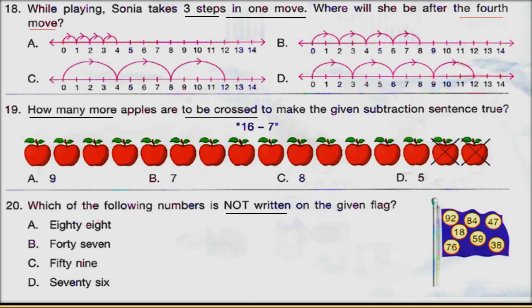You can see my previous video for class 1 for questions up to 17. Question 18: while playing, Sonia takes 3 steps in 1 move. Where will she be after the 4th move? See the options and choose the option which shows 3 steps in 1 move, then find out where she will be after the 4th move. You can check answers at the end of the video.